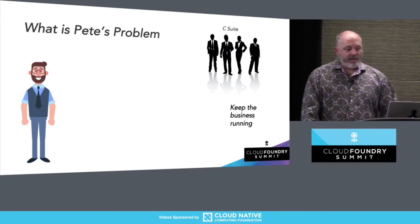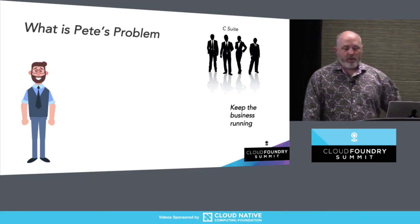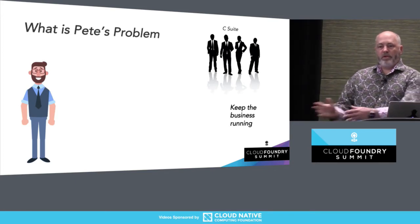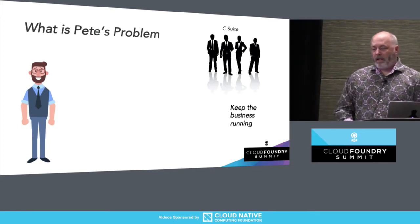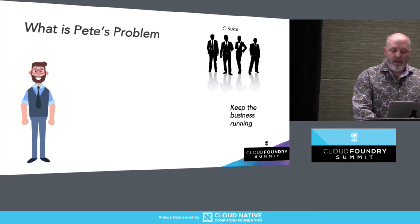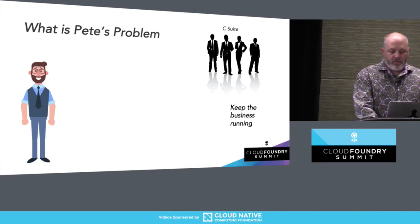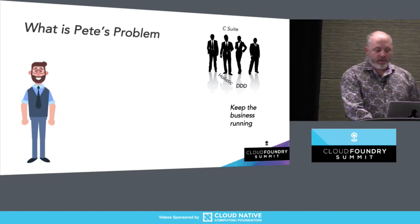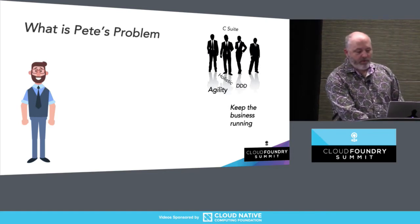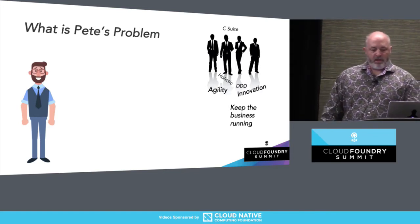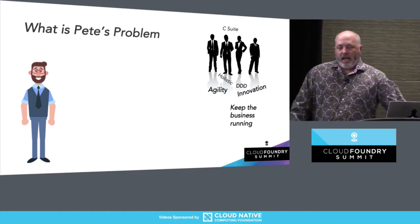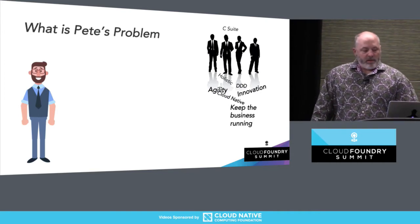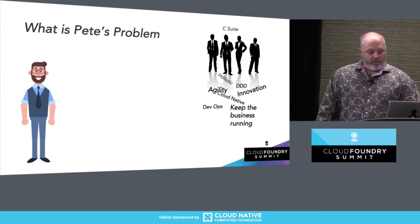Pete knows the C-suite really wants us to go to the next step, and they don't necessarily understand how challenging that is. The C-suite says the bosses want to keep the business running, but they also want a holistic approach — they want to use DDD and agility and allow for innovation, cloud-native DevOps.